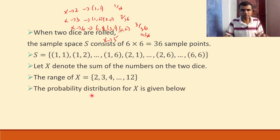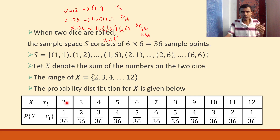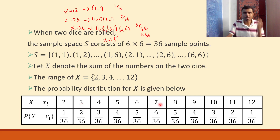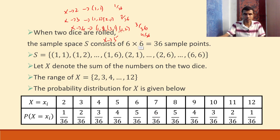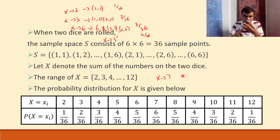Now, if I construct the probability distribution table: capital X can be two with probability 1/36. For capital X equals seven, the probability is 6/36. The possibilities for seven are: (1,6), (6,1), (2,5), (5,2), (3,4), and (4,3) — six combinations.